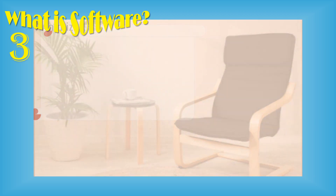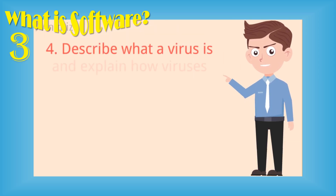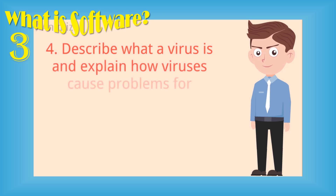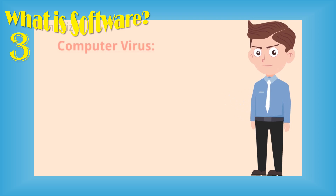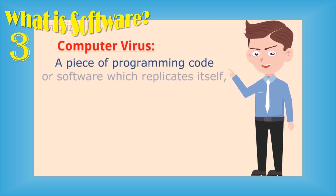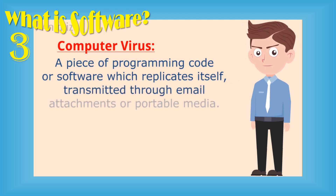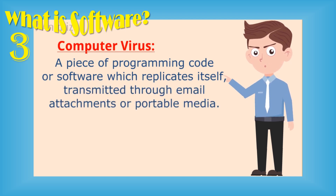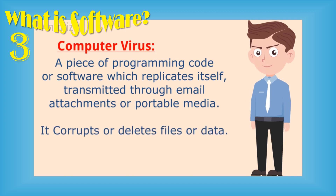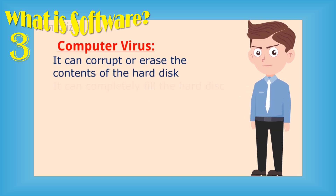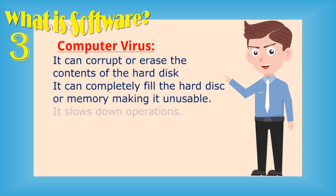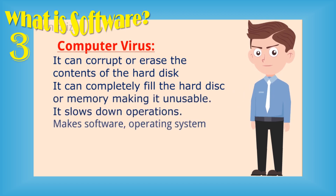Question number four: describe what a virus is and explain how viruses cause problems for computer users. A computer virus is a piece of programming code or software which replicates itself, transmitted through email, attachments, or portable media. It corrupts or deletes files or data. A computer virus can corrupt or erase the contents of the hard disk, completely fill the hard disk or memory making it unusable, and slow down operations making software or the operating system unusable.